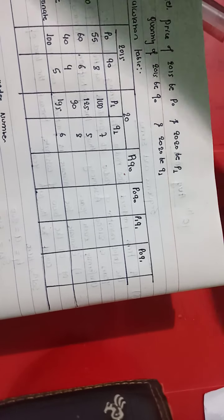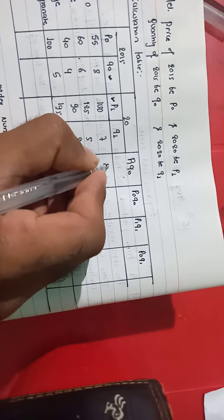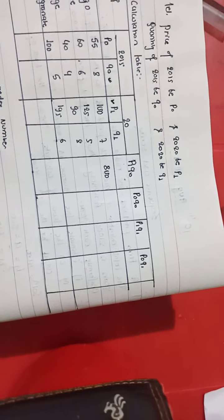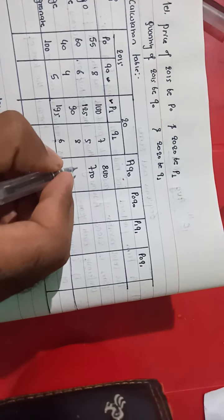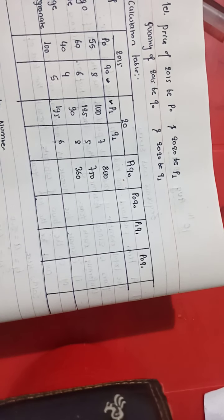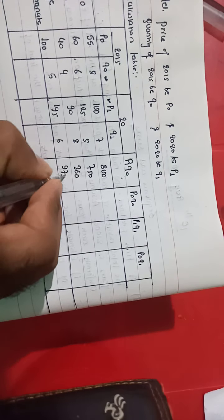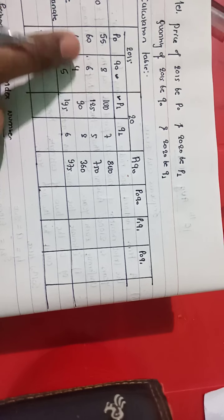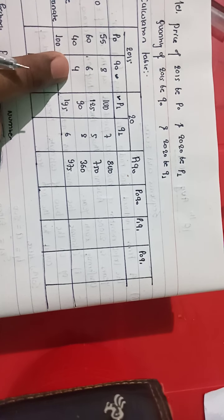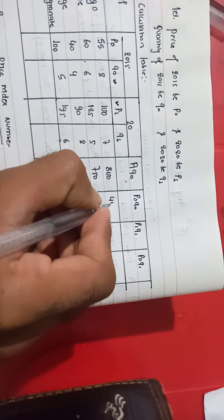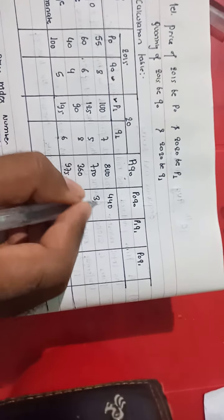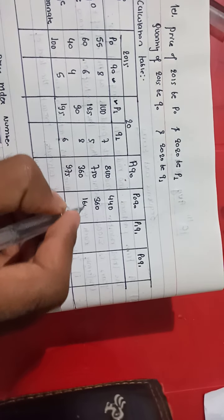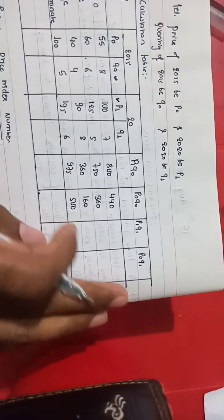Let us now calculate these columns in the table. For P1Q0, we multiply P1 (price of 2020) by Q0 (quantity of 2015): 18 × 100 = 800 (actually 1800 — as given), 125 × 6 = 750, 90 × 4 = 360, and 195 × 5 = 975. For P0Q0, we multiply the price of 2015 by quantity of 2015: 55 × 8 = 440, 60 × 6 = 360, 40 × 4 = 160, 100 × 5 = 500.